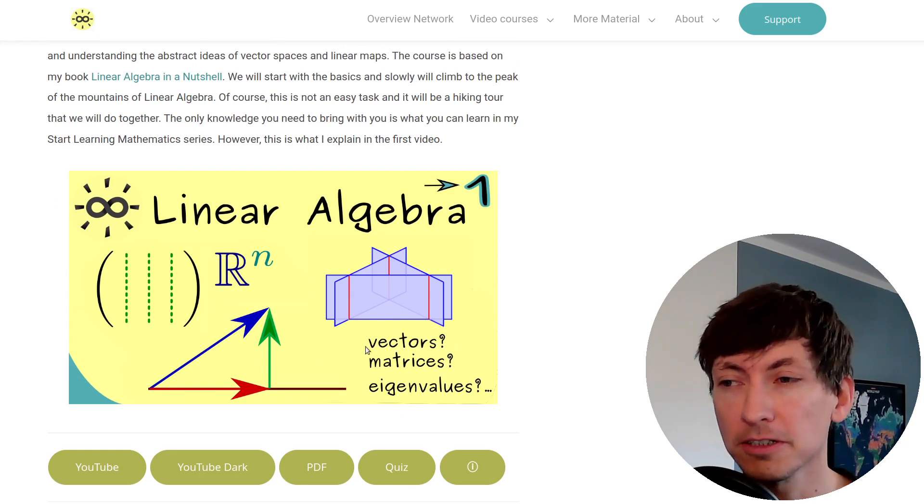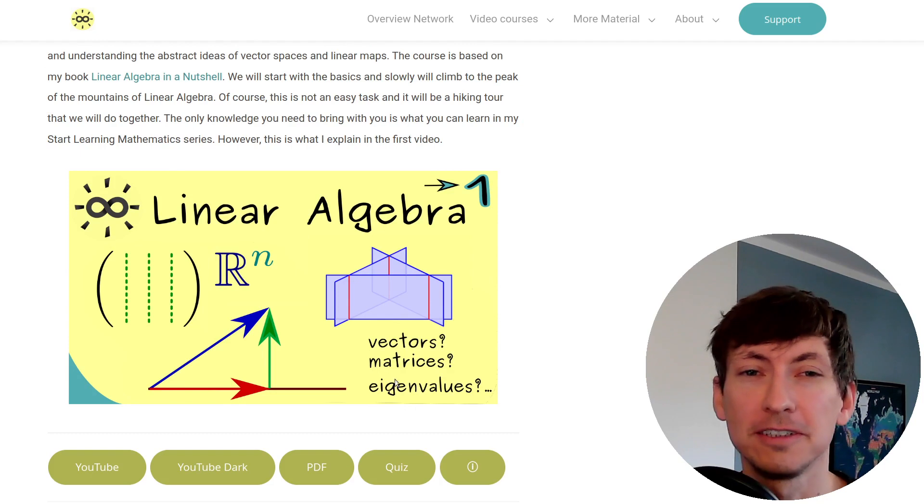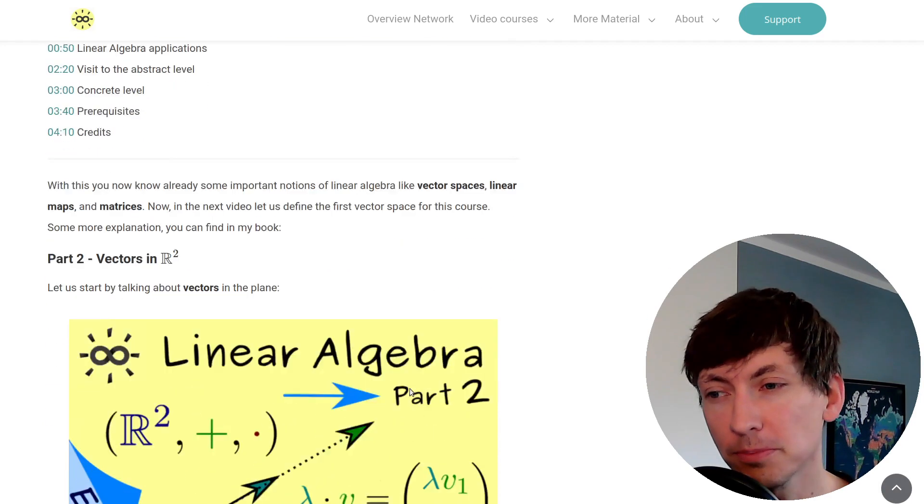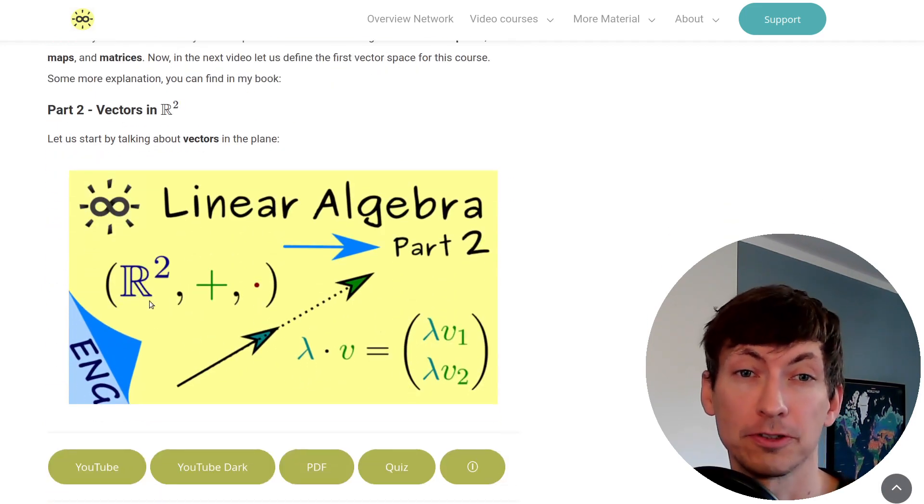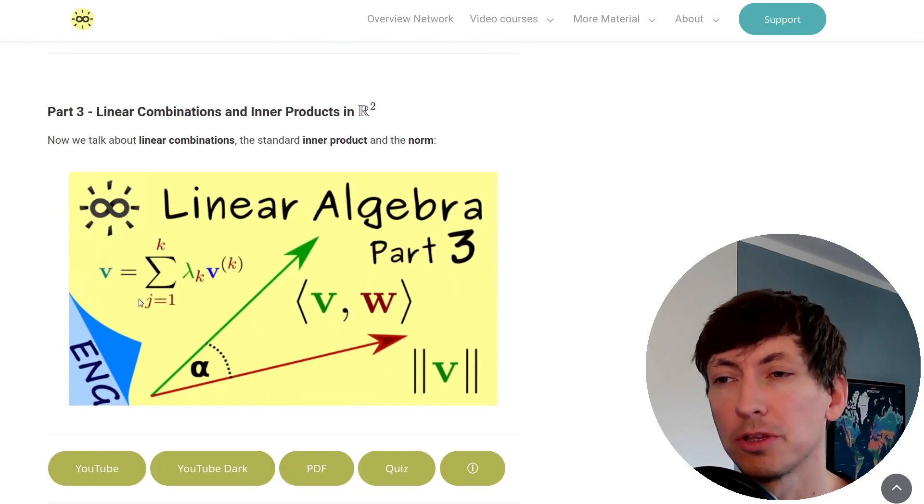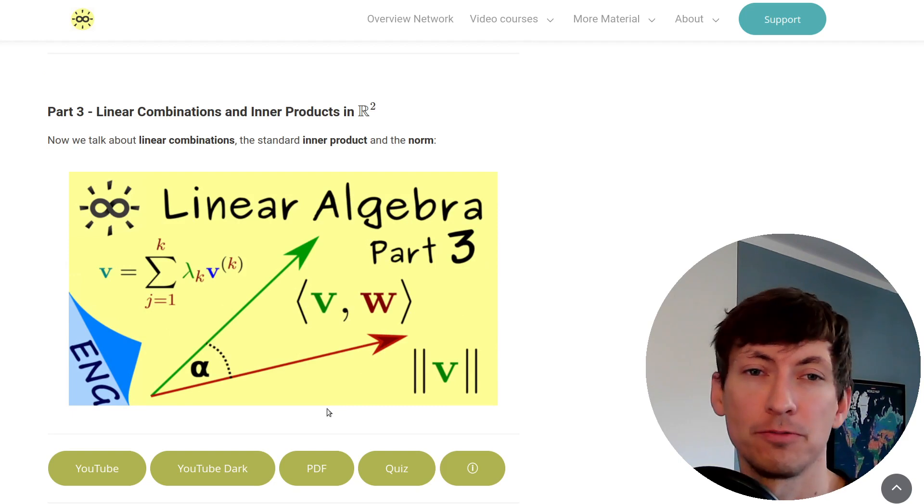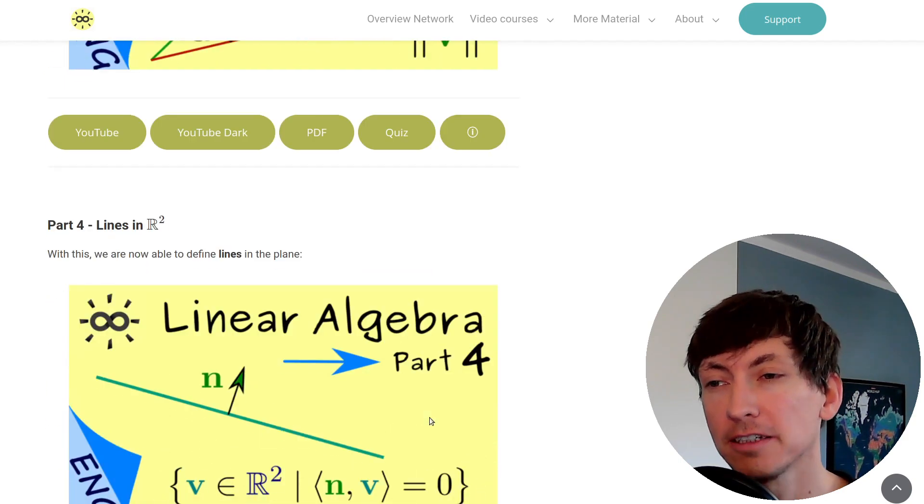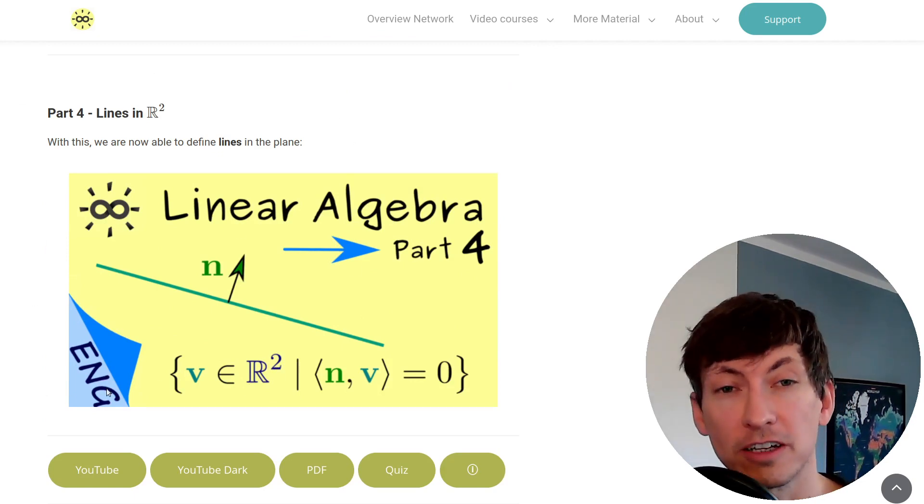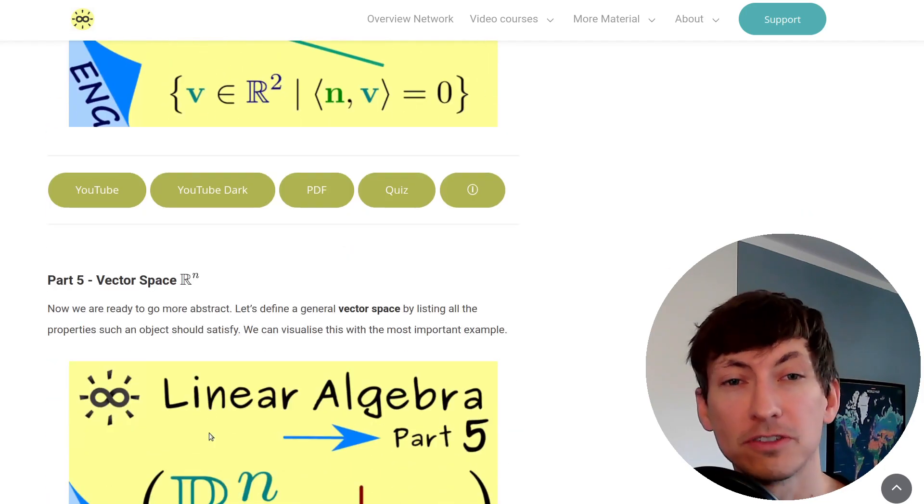The first video is just an introduction where I tell you that we will cover vectors, matrices, eigenvalues and so on. Then with the second video we start with a topic, but very simple because we start with R2 first. Hence if you already know how to calculate with vectors in the plane you can quickly go through the first videos. In the next one we talk about linear combinations and the inner product in R2. This means we will talk about how to measure angles and the length of a vector, and this we can use to finally define lines in the plane. Until this point this was just an introduction for linear algebra on the simplest level.